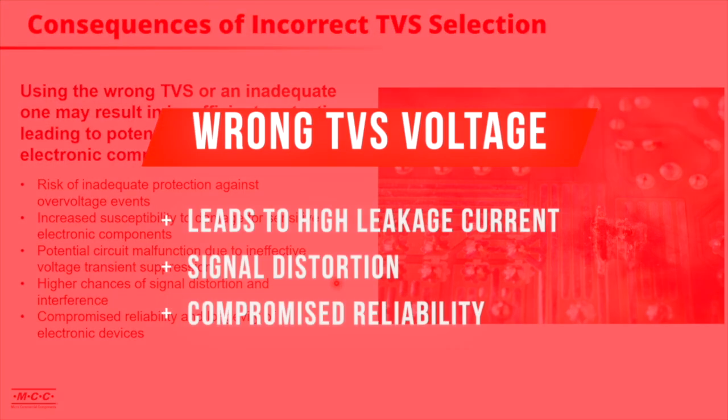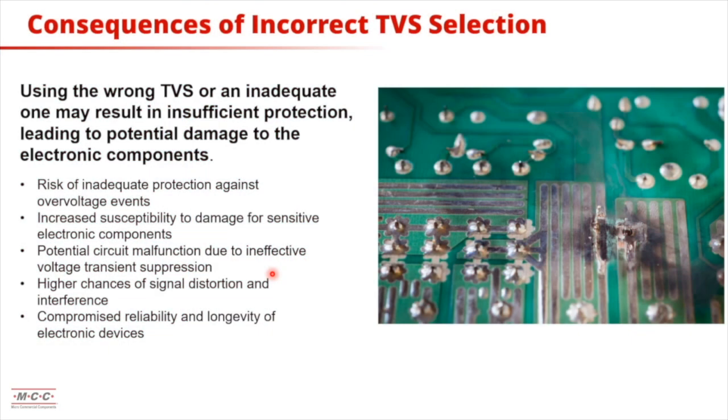If we choose the incorrect working voltage, it could drive the TVS into avalanche breakdown mode. In this mode, it could distort signals or interfere with the power line, and could cause the reliability or longevity of the TVS to be compromised.